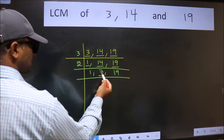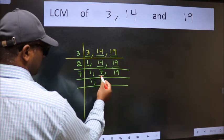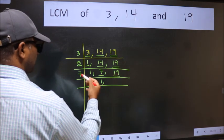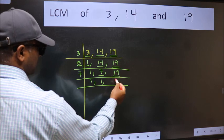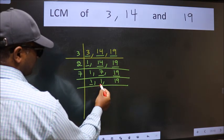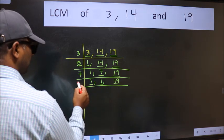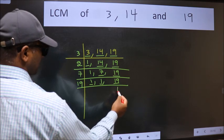Now here we have 7. 7 is a prime number so 7 goes into 7. The other number 19 not divisible by 7 so we write it down as it is. Now we got 1 here and here. So focus on the next number 19. 19 is a prime number so 19 goes into 19.